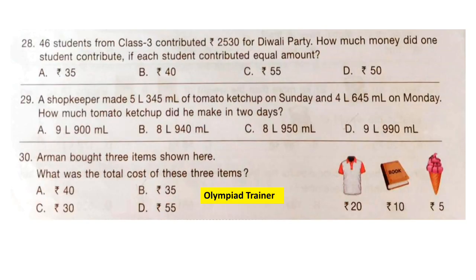Question 28: 46 students from class 3 contributed Rs. 2530 for a Diwali party. How much money did one student contribute if each student contributed an equal amount? To find the amount contributed by each student, we divide 2530 by 46. The correct answer is option C: Rs. 55.